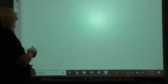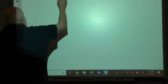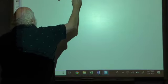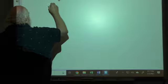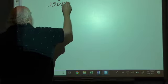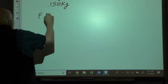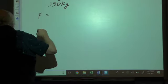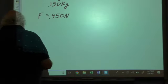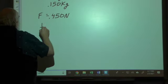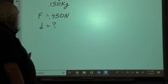Okay, example number two. Now we have two 150 gram masses, and if we change this to kilograms that becomes 0.150 kilograms. The force between these two objects is 0.450 newtons, and we want to know what is the distance between these two objects.